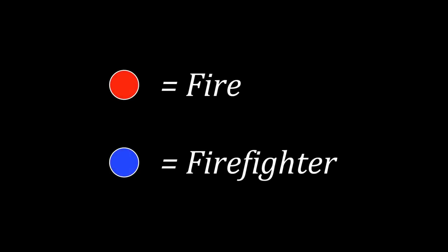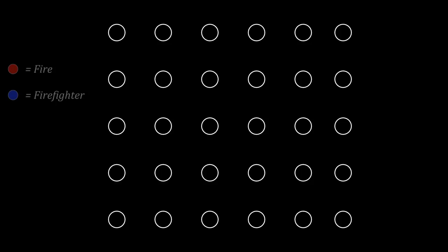We started out just learning basic graph theory — we spent about a week on that, and then about another half week learning the problem itself. We were particularly looking at the firefighter problem, where something undesirable is spreading through the network. It's called the firefighter problem because it's usually fire spreading through some geographic region, and we're trying to contain that fire as best we can.